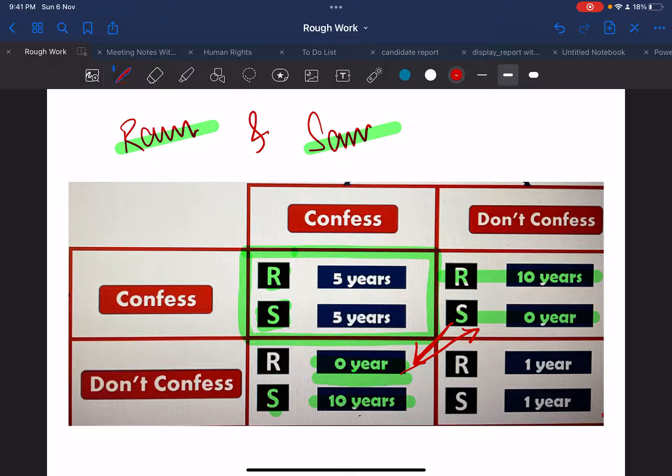Then police says that in case if both of you confess, then both of you will get five years. And in case if both of you don't confess, then both of you will get one year.